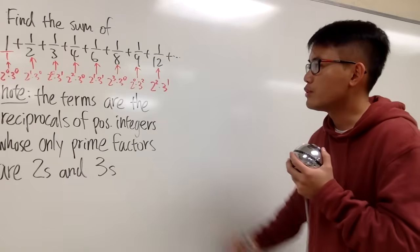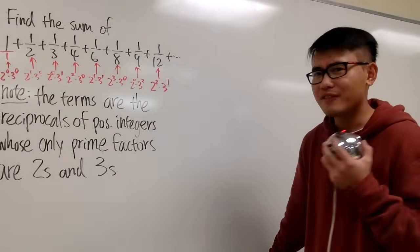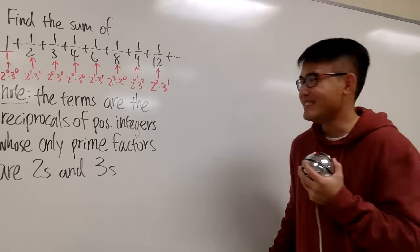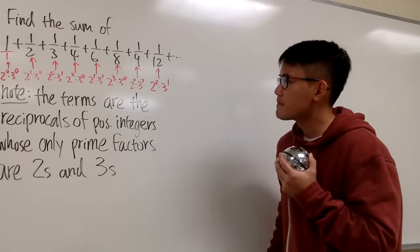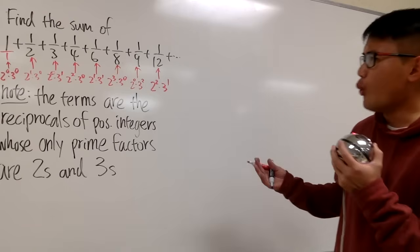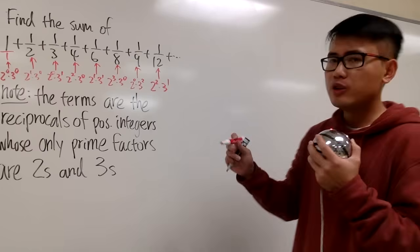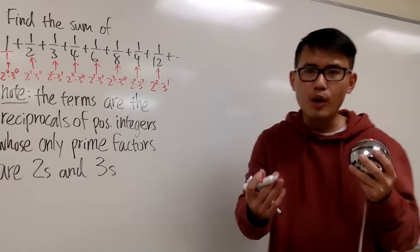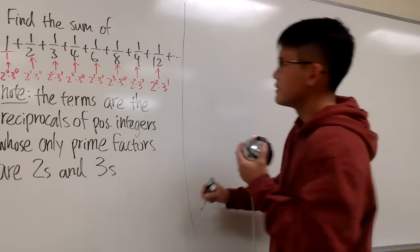This series actually converges — that's kind of amazing — and there is a final sum. That's even cooler. Our goal is to find out what the sum is. I want to reorganize this, because I see that the denominators are just 2 to some power times 3 to some power.